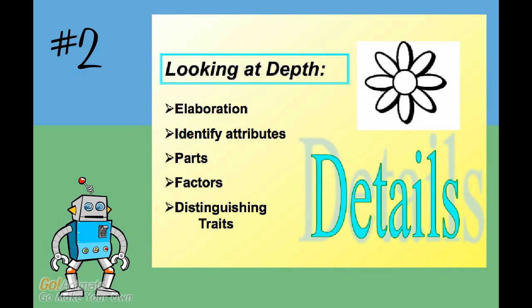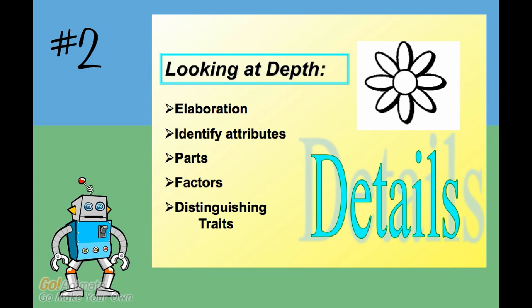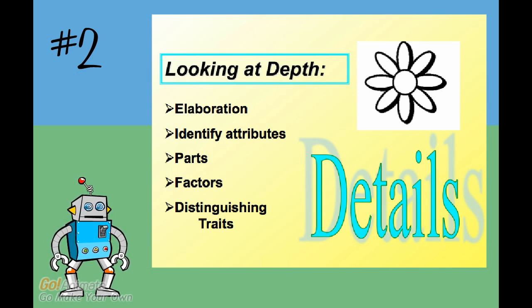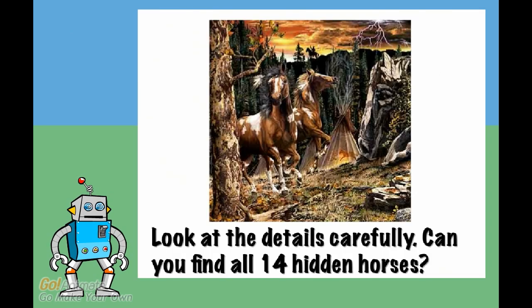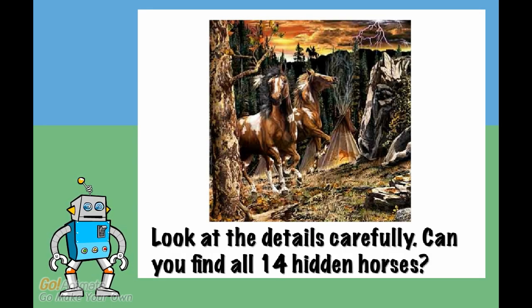The second icon is a flower. It stands for details, or the parts of something. You have to look very closely to see the details in your topic, just like you would have to look closely to find the 14 horses here.